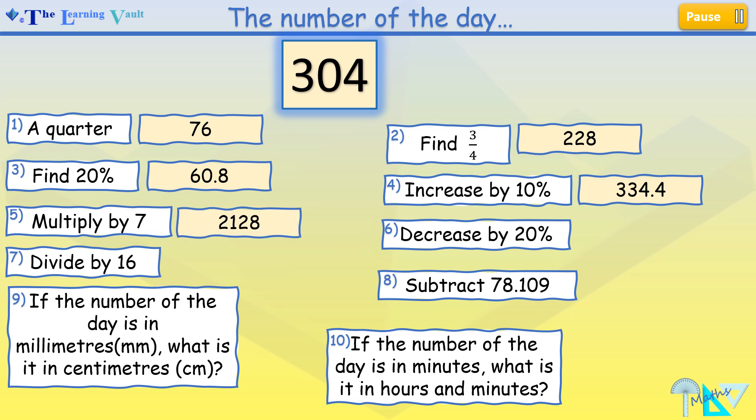Multiply by 7, we get 2,128. Decrease by 20%, we get 243.2. Divide by 16, we get 19.